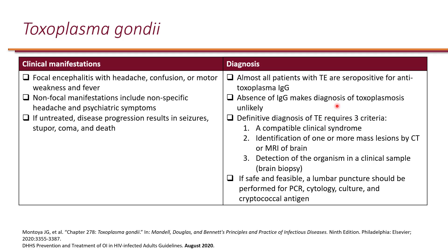For diagnosis, it is important for all patients with TE to be tested for toxoplasma IgG, because they will be seropositive. If the IgG is negative, it is very unlikely that someone has toxoplasmosis. Definitive diagnosis requires three criteria: a compatible clinical syndrome, identification of one or more mass lesions by CT or MRI of the brain, and detection of the organism in a clinical sample — typically brain biopsy, which is reserved as a last resort. In practice, if someone has a positive toxoplasma IgG, you treat them empirically; it is not necessary to proceed to brain biopsy.